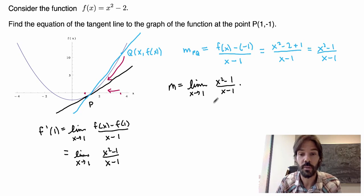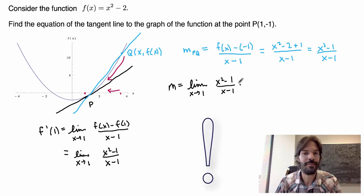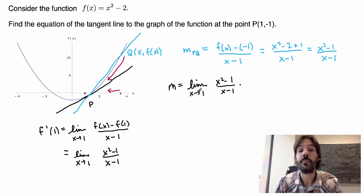x² - 1 becomes 0 here, and x - 1 becomes 0. So I get something which is kind of 0 over 0. But that doesn't make any sense. 0 over 0 is not well defined. However, this limit is well defined. So there's something tricky going on here.